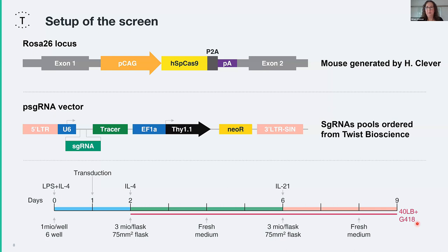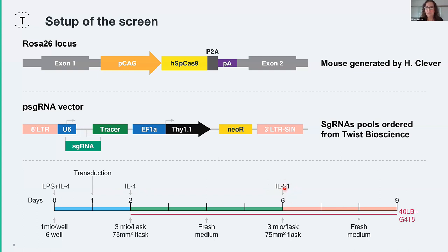The next thing you need is a system in which you can screen. As mentioned, we used the IGB system. I isolated the B cells from the Cas9 mice, stimulated them with LPS and IL-4, and then after one day — after they are properly activated — I transduced them with the supernatant of NTX cells. After another day, the cells were seeded on the 40LV feeder cells and received additional IL-4 and G418 neomycin. The cells were allowed to grow for four days. At day six, a part of the cells was taken for sorting and DNA isolation, while the rest was reseeded on fresh flasks and now received IL-21, initiating the plasma blast differentiation.